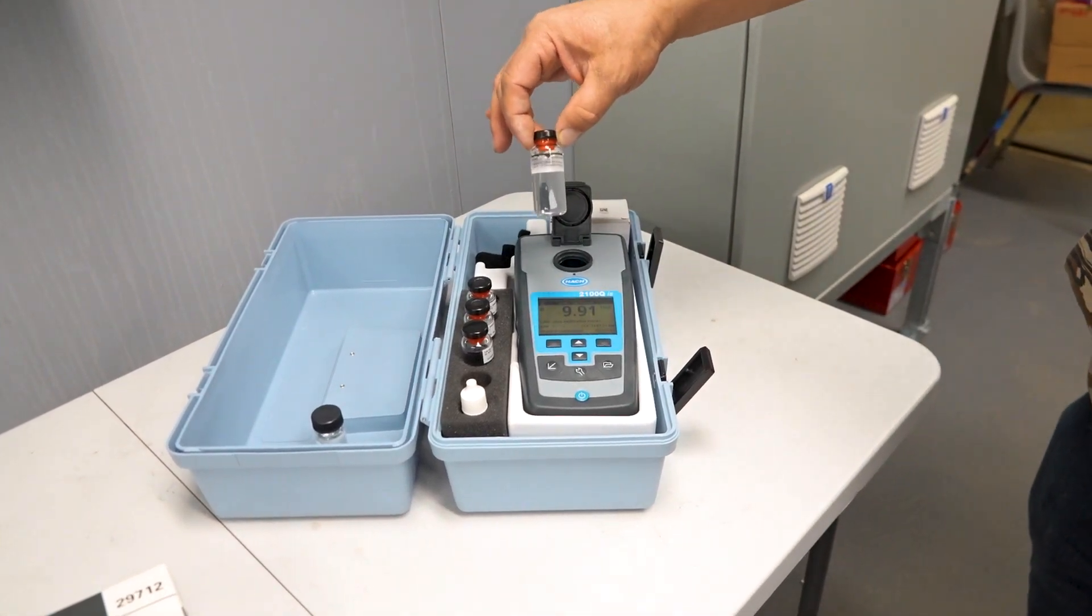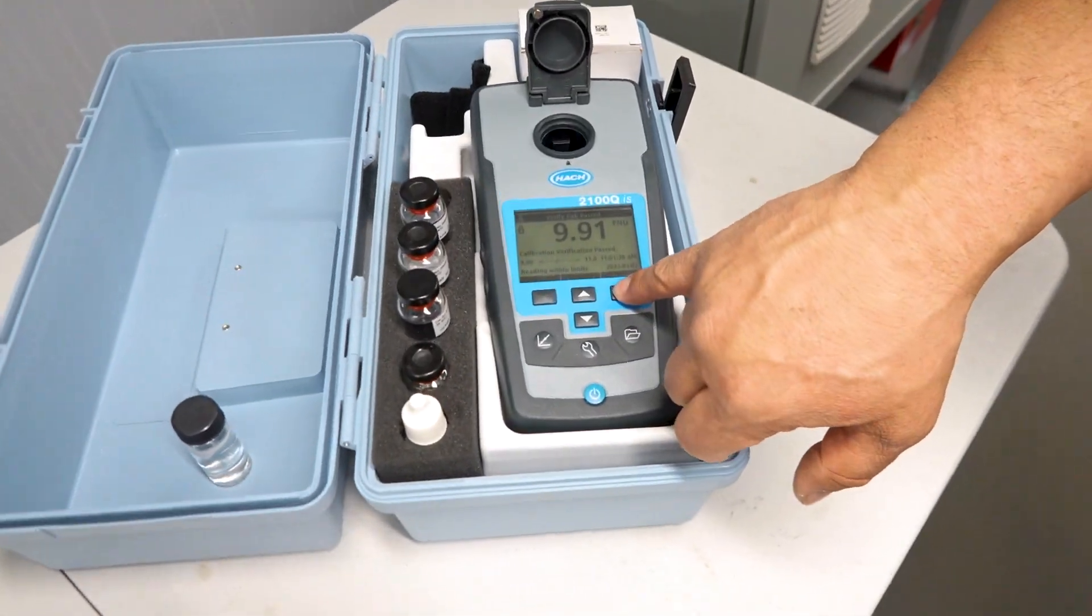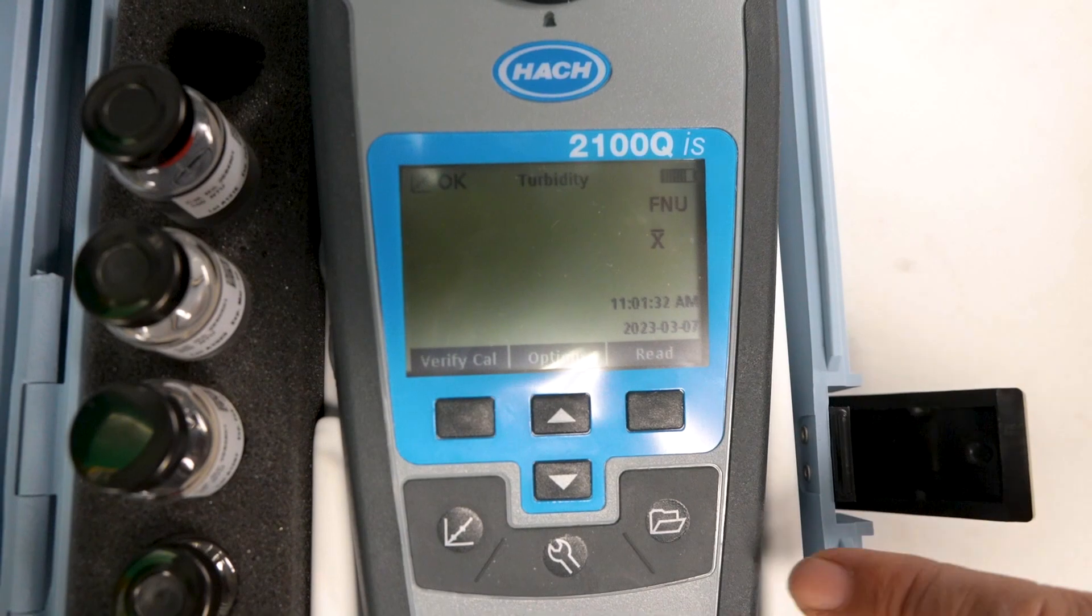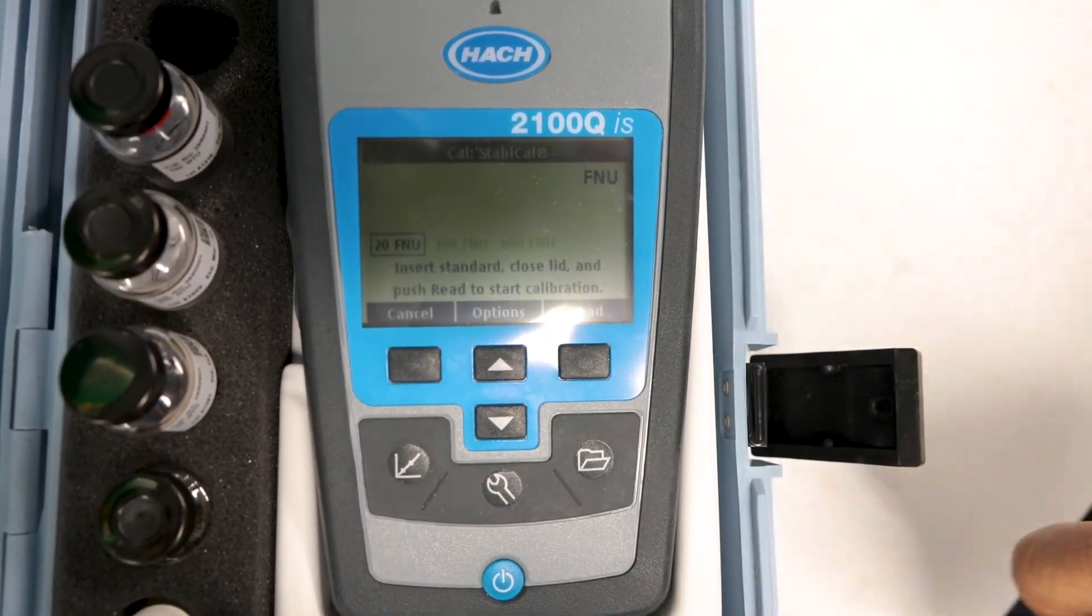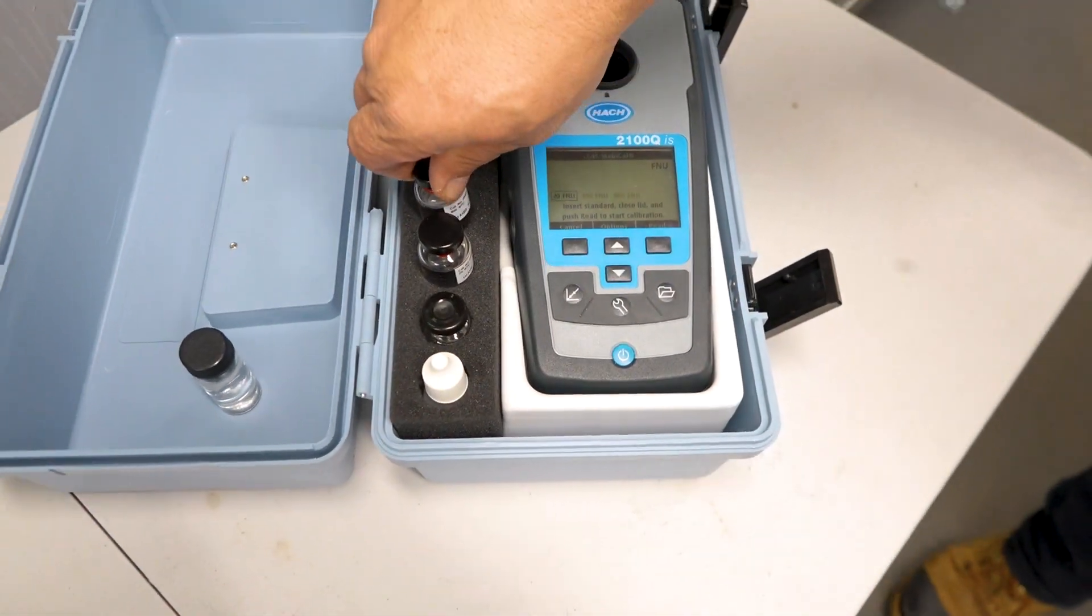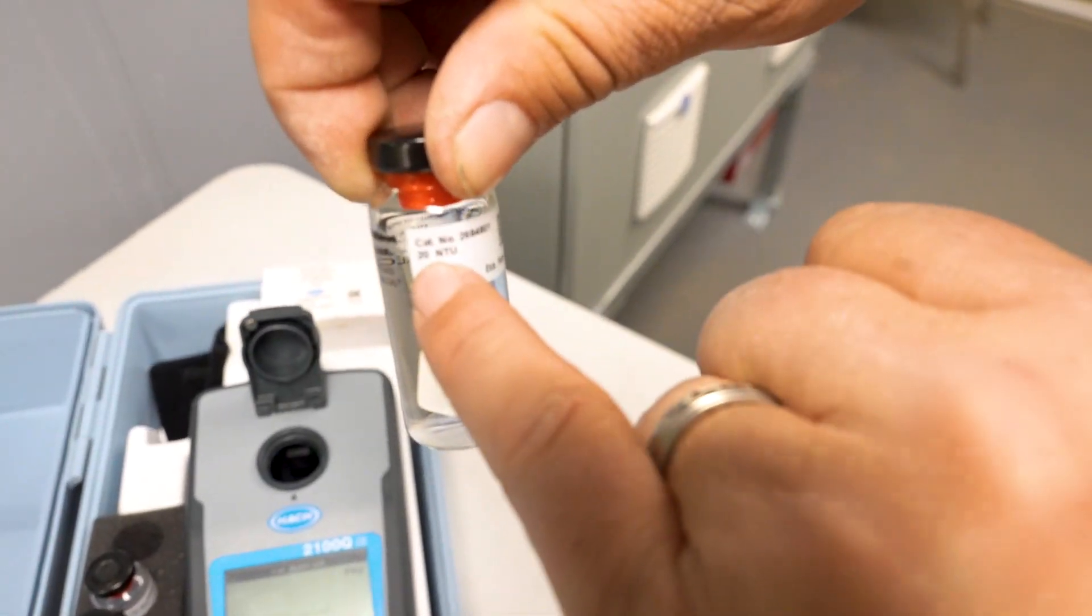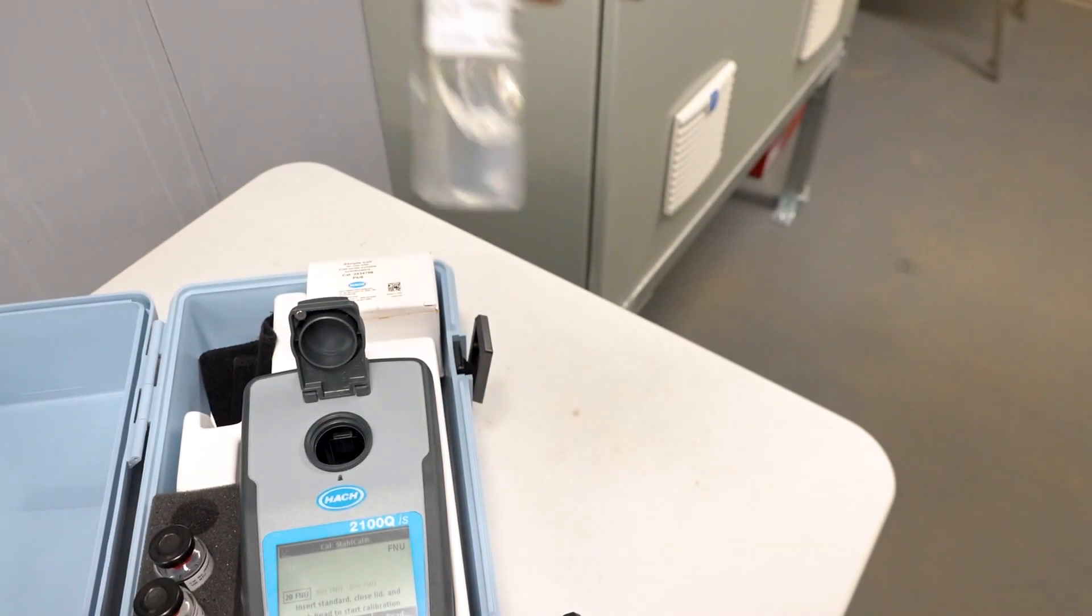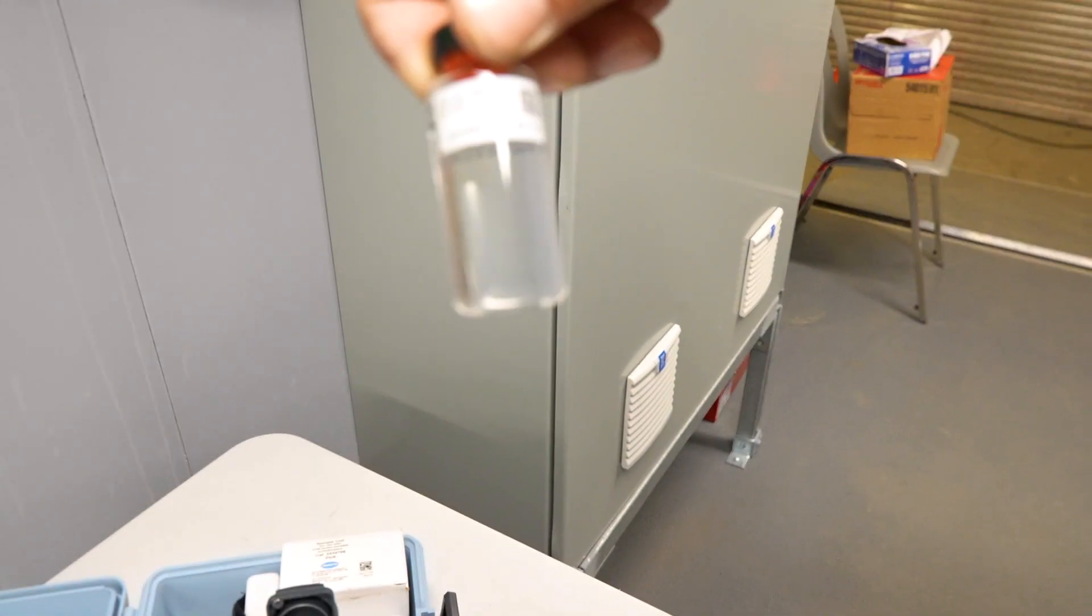So we remove the 10 NTU sample, put it back in the case, and then we hit done for the verification. Then we hit our calibration button here on the bottom left, and then it tells you to start with a 20 FNU, which is right here. It'll be 20, each bottle is labeled again, 20 NTU, and you've got to swirl it up again to get that liquid in there mixed up good, so you get the right cloudiness.